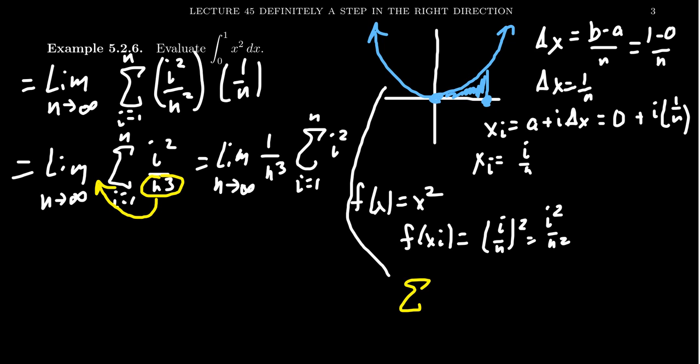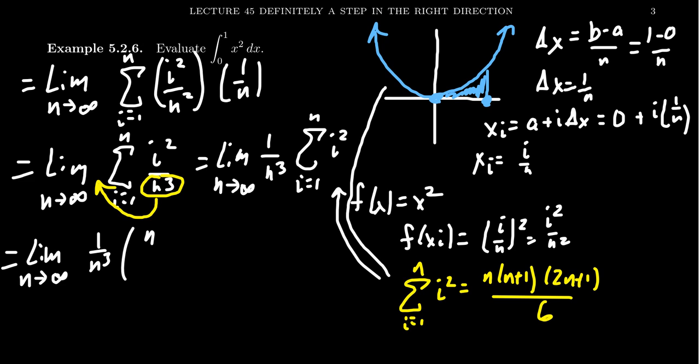Now to proceed from here, we have to remember the sigma power rule with respect to i squared. So if we take the sum as i goes from one to n of i squared, recall this is equal to n times n plus one times two n plus one all over six. And so we can make that substitution in for the sum of i squared above. And if we do that, we're going to get that this is equal to the limit as n goes to infinity of one over n cubed times n times n plus one times two n plus one all over six.